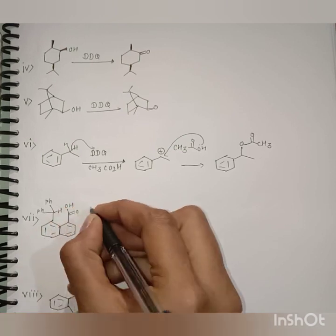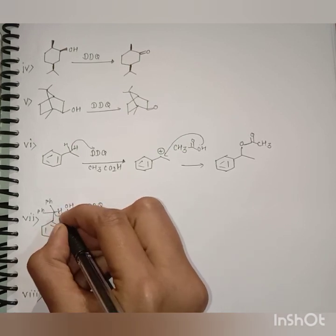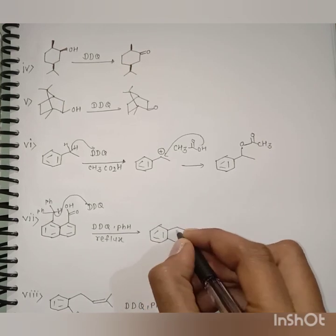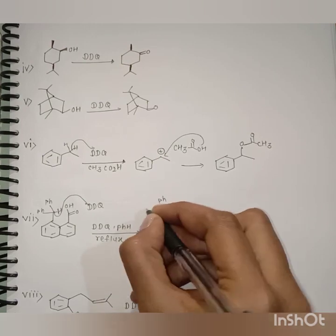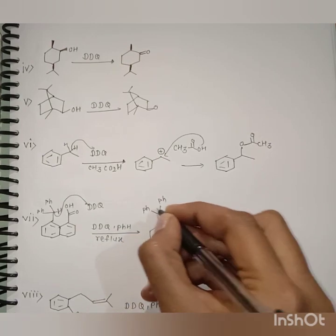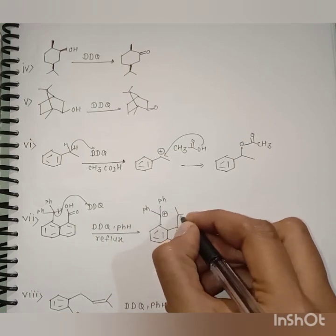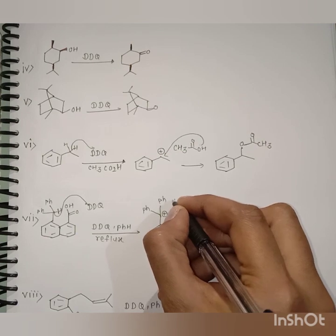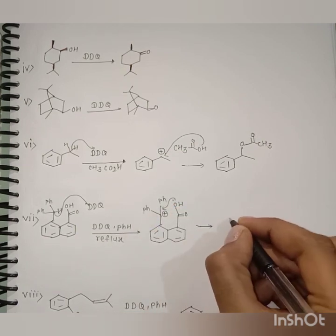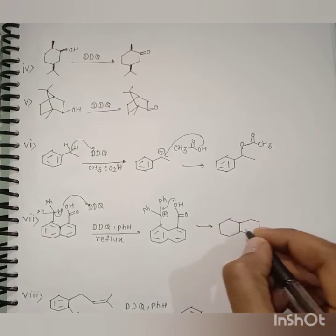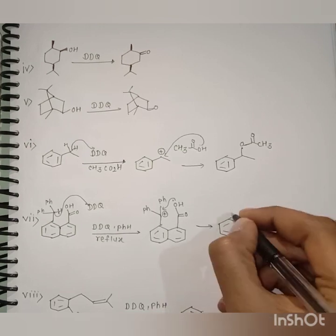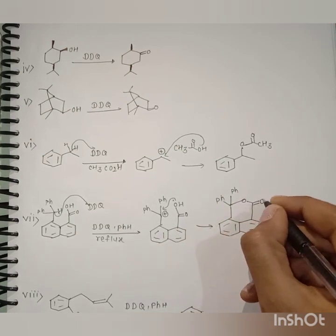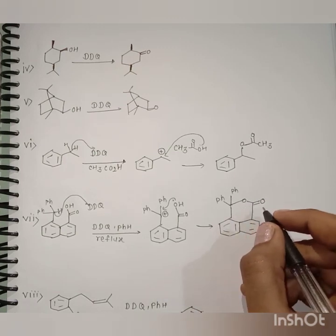Once again, DDQ abstracts this hydrogen to form a carbocation, which is stabilized by these two phenyl groups. Once again, this carbocation is captured intramolecularly by this nucleophile to give the product where oxidation takes place.